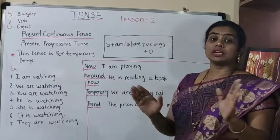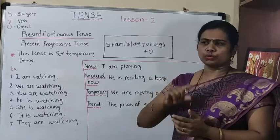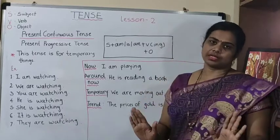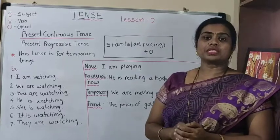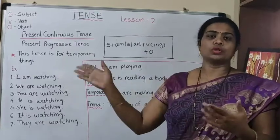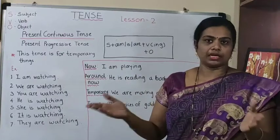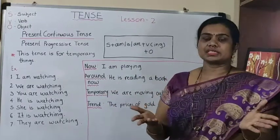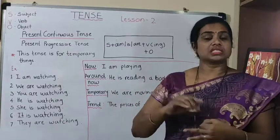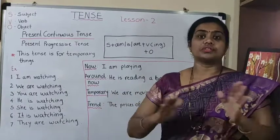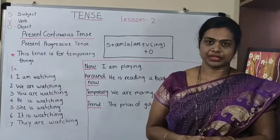So the four conditions for present progressive tense are: first, 'now' — what you are doing at this moment; second, 'around now' — when you are unsure of exact timing; third, 'temporary' — a situation that won't last; and fourth, 'trends' — like Ether prices, gold prices, petrol prices that are changing. Whenever these conditions apply, you can use the present progressive tense.